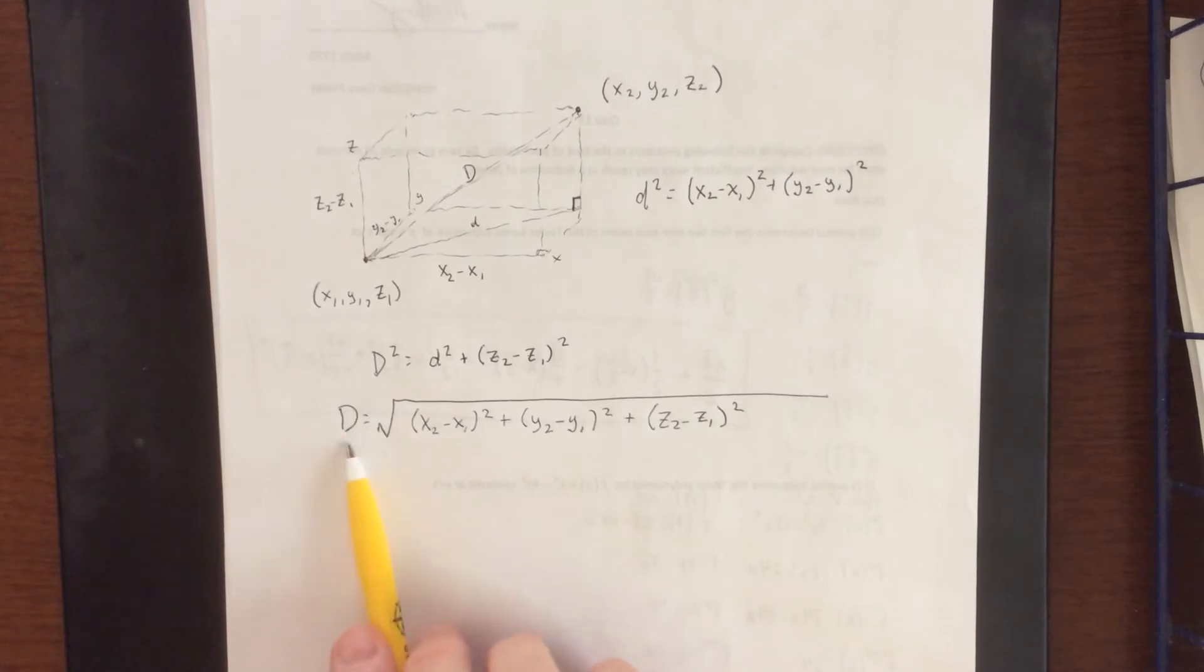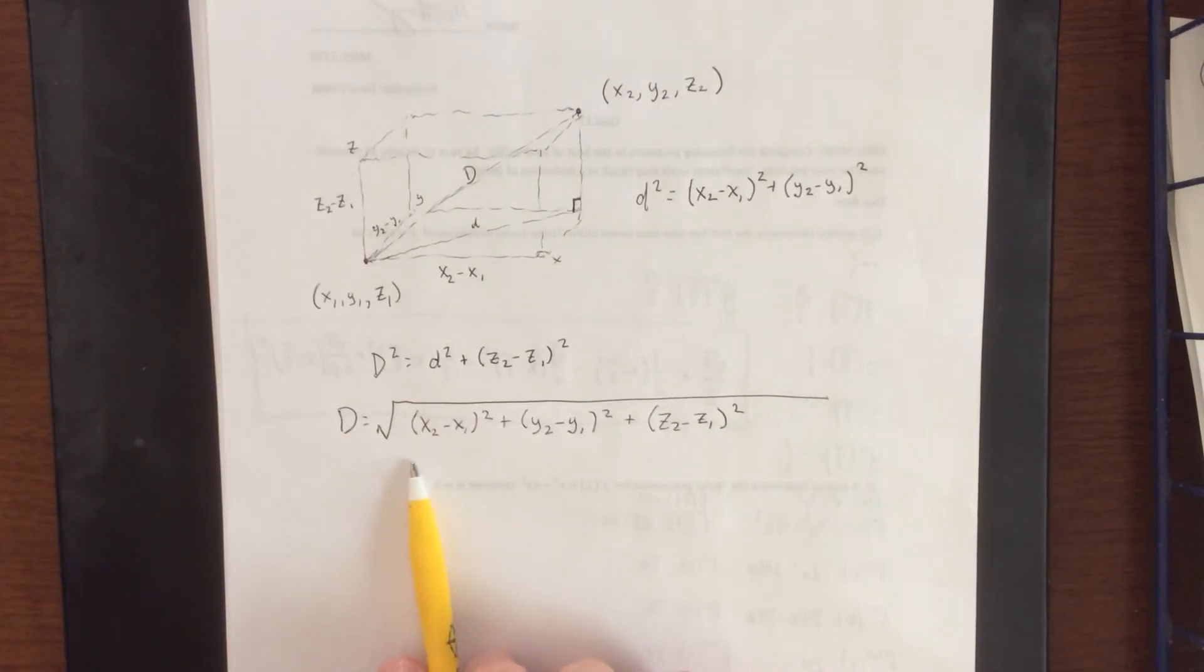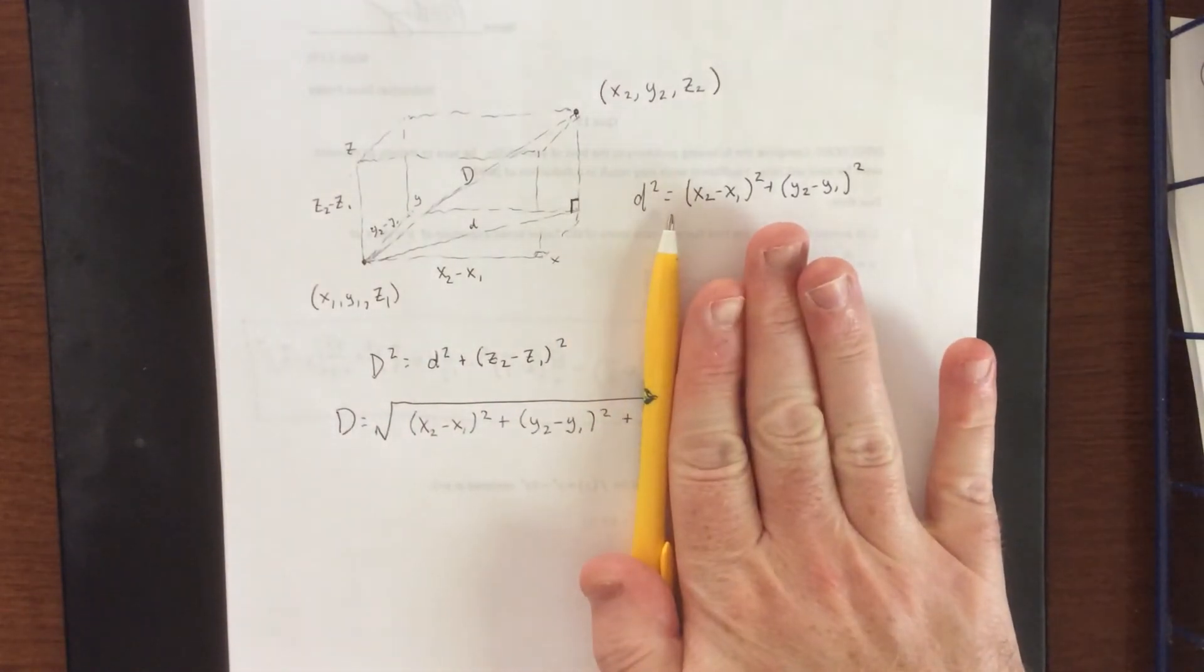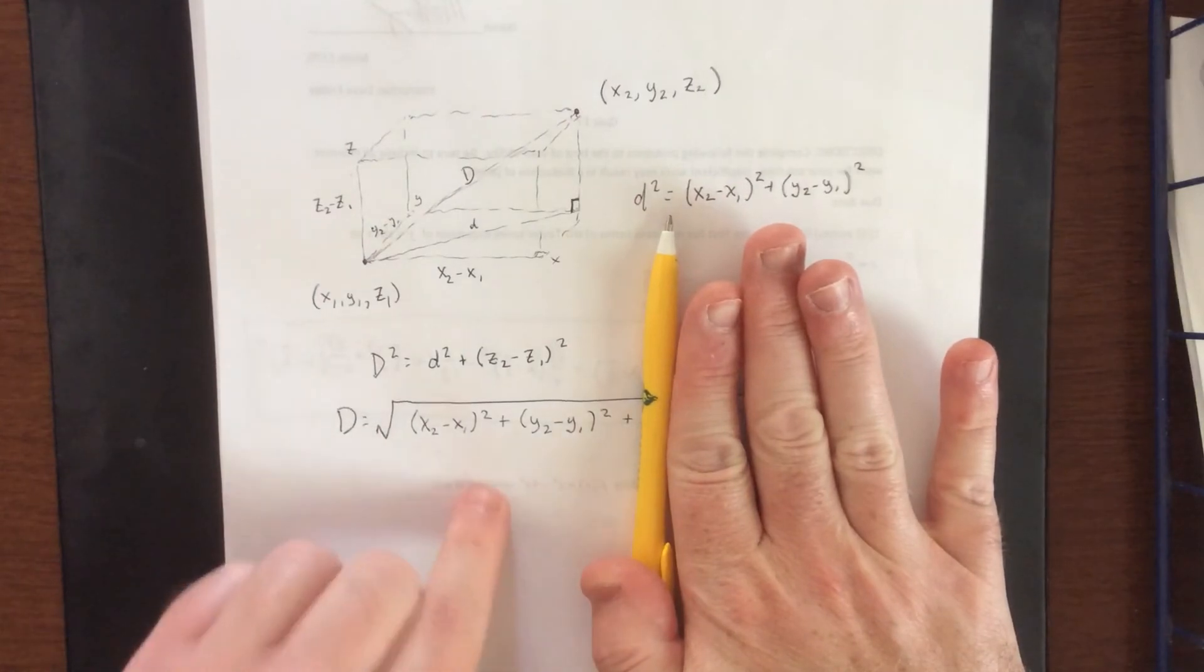Because we're dealing with distance, we're going to define this as the positive square root. We don't need to worry about a plus or minus here. You'll also notice that if we cut it off right here, we would have exactly the distance formula in two dimensions.